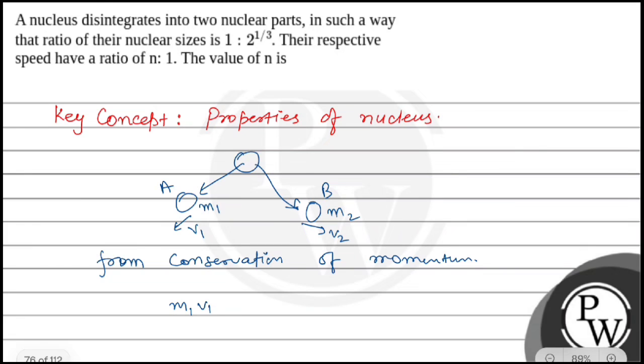m1 times v1 equals m2 times v2, so here we can see m1 by m2 equals v2 by v1.